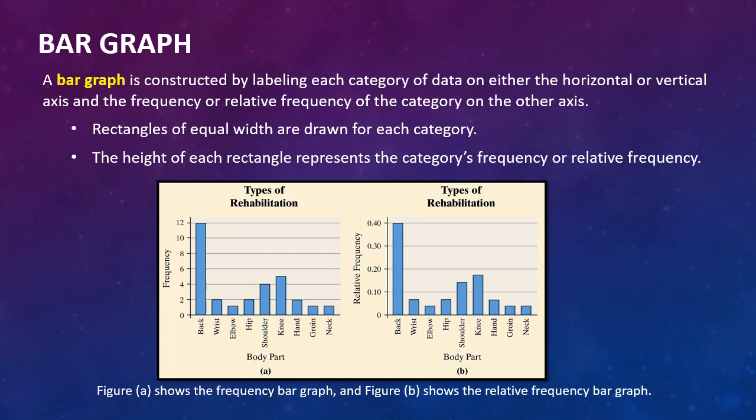Using the data from Example 1 in a bar graph gives us a really powerful visual. On the left, we have types of rehabilitation and the actual frequency. On the right, we have the percentages. Relative frequency charts are often done as pie charts, where back would have the biggest slice. Using graphs can be a very powerful tool for increasing our understanding, making inferences, seeing data more clearly and quickly, and drawing conclusions from the data.